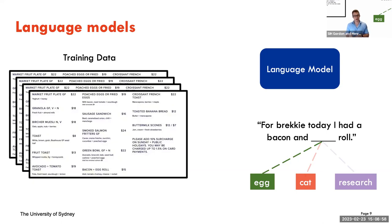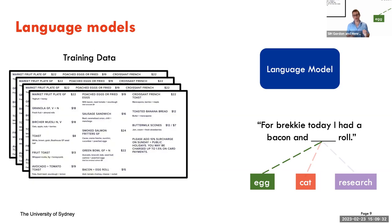You would train this model on a large amount of text — what we call a corpus — which would include, let's say, every single menu from every single restaurant in Australia. You give this model all of these different sentences, and the model finds a way to make a numeric representation of all of these things. Then if you give it a new piece of text — for example, 'for brekky today I had a bacon and blank roll' — the model can predict what is the most statistically likely word to fill in that blank.